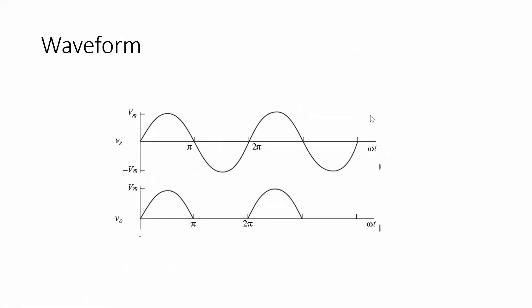The output waveform is as follows: the input waveform spans 0° to 360° as one full cycle (0° to 180° positive half cycle, 180° to 360° negative half cycle). During the positive half cycle, diode D1 is forward biased, current flows through RL, and output voltage Vo = I × RL. During the negative half cycle, the diode is reverse biased, acts as an open switch, current is zero, and output voltage is zero. So for the entire cycle, output is obtained only during the positive half cycle — hence it is called a half-way rectifier.